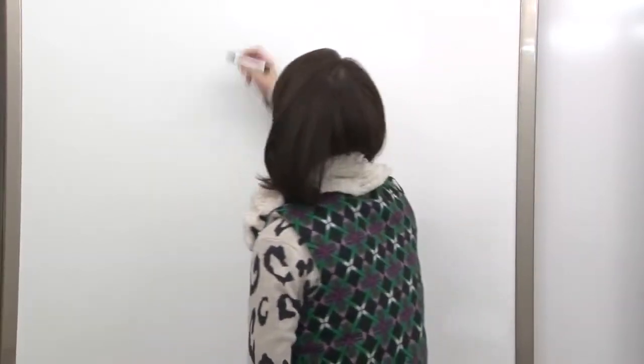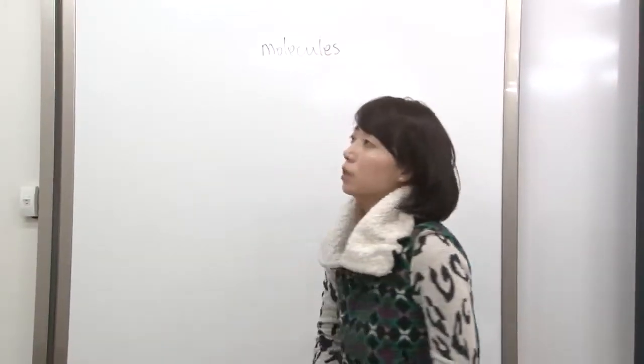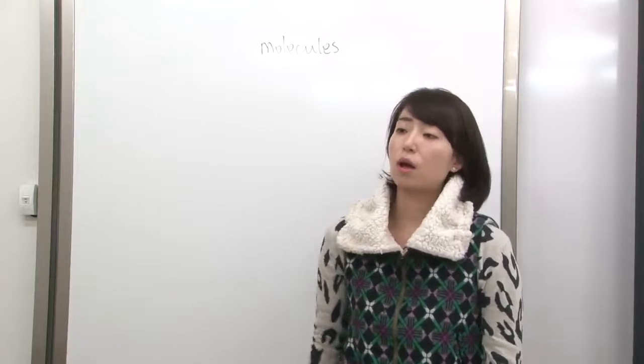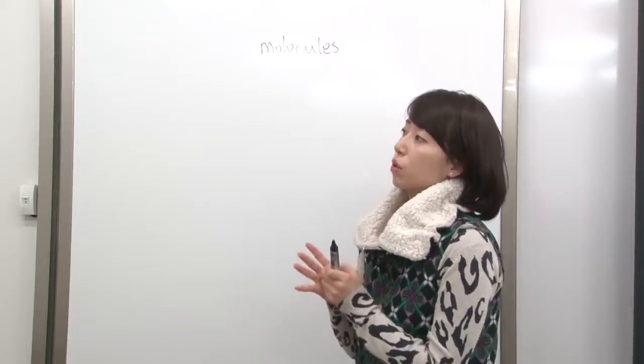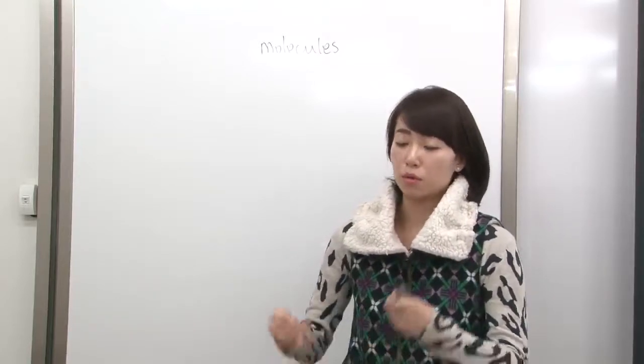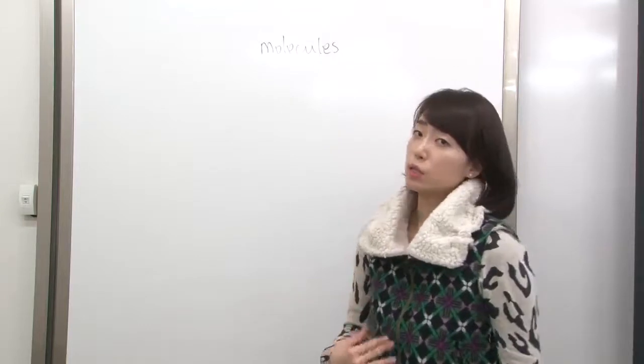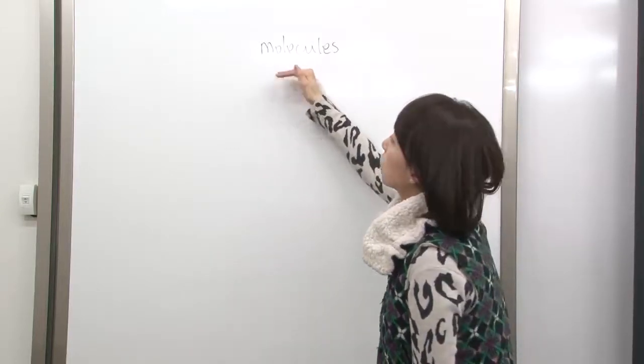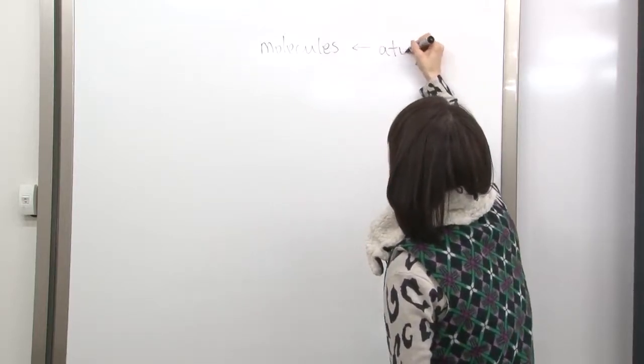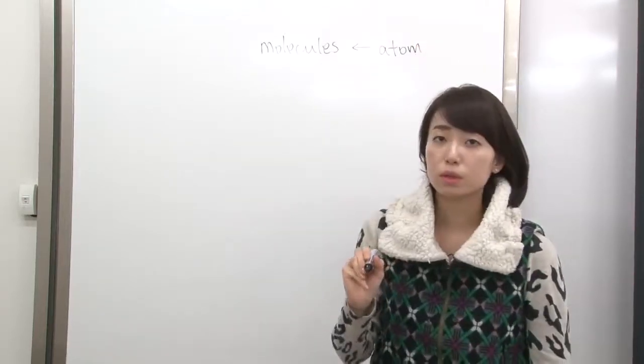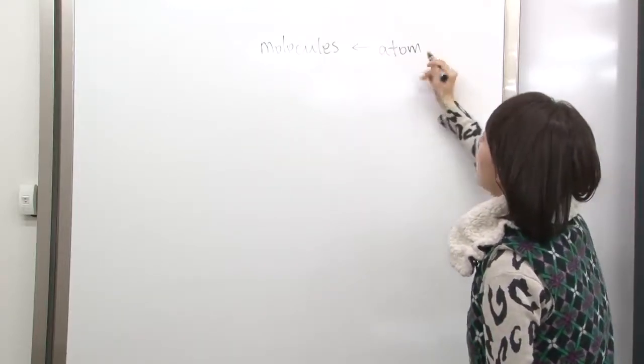In our body, we have protein that makes up the cell. Also, we have carbohydrates, we have lipids, and we have DNA molecules. Everything in our body is actually composed of molecules. So what is molecules? Molecules are composed of atoms, so atom actually makes up the molecules. We'll talk more about the molecules later, after we learn about the atoms.